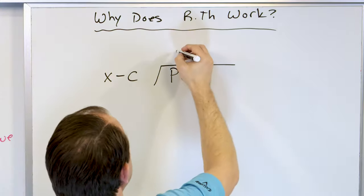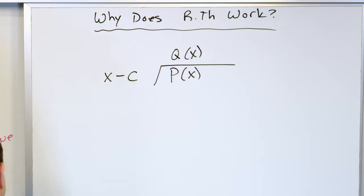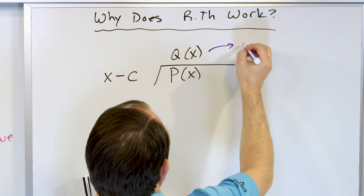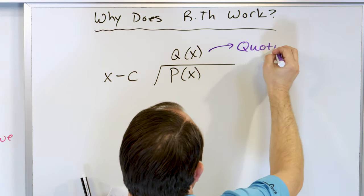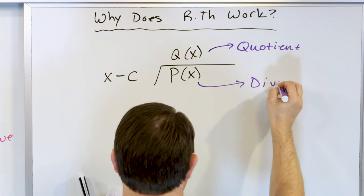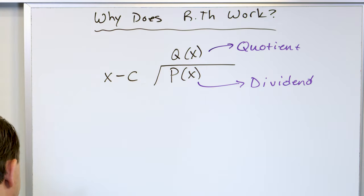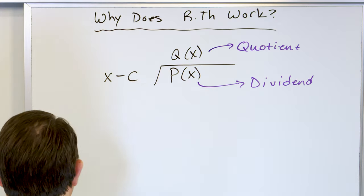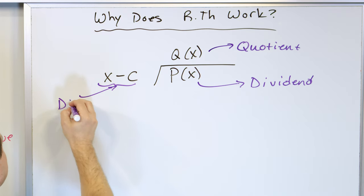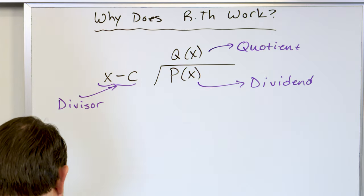This thing on the inside is called the dividend. This term on the outside is called the divisor — that's what I'm dividing by. When I go through this process, multiplying and subtracting all the way to the end, eventually I'm going to get some remainder.